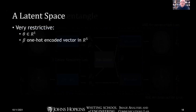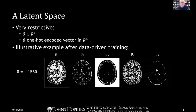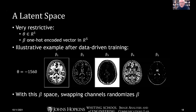We had to find very restrictive latent spaces. Initially, theta is just a one-dimensional variable — despite the wide variation in contrast, every image is represented on one axis. The beta anatomy variable is a one-hot encoded vector in R5, meaning it's a binary vector where only one value can be 1. After training, for example, theta turned out to be -1560, and the five beta channels turned out to be binary, with only one active at any pixel. We realized the randomization process can be richer — we can swap individual channels, not just entire beta vectors.